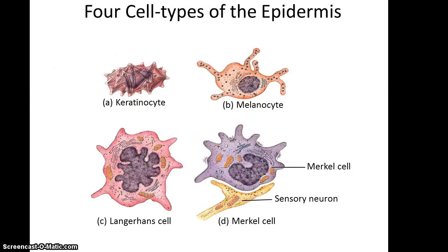When looking at the epidermis, you see that it is composed of four main kinds of cells: keratinocytes, which is the dominant or most populous kind of cell; melanocytes; Langerhans cells; and Merkel cells, usually associated with a sensory neuron.